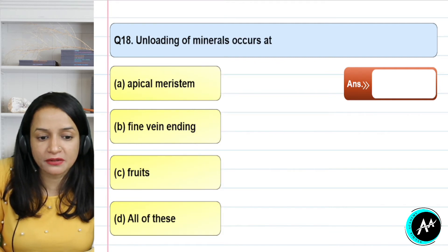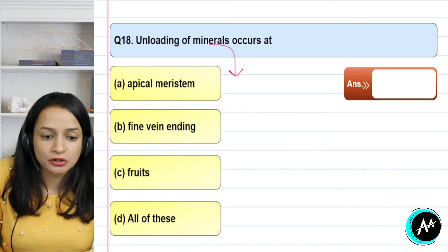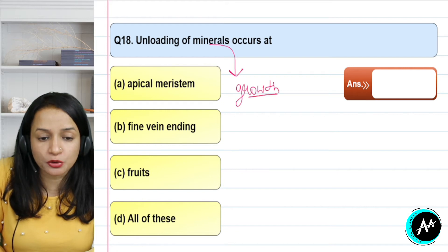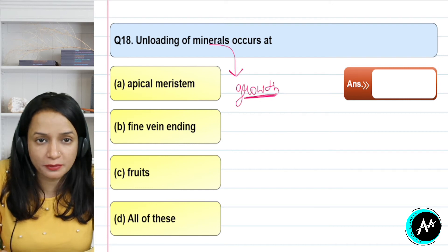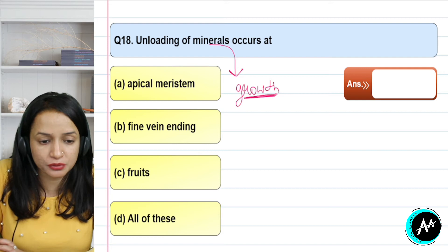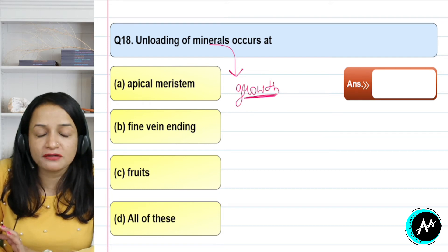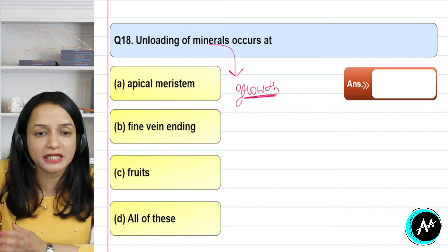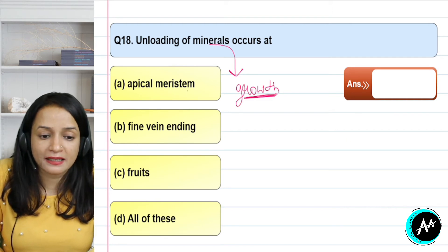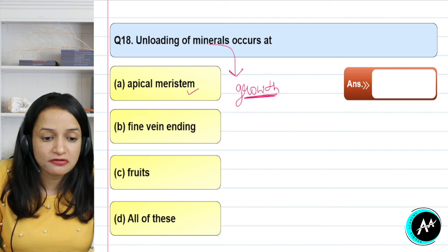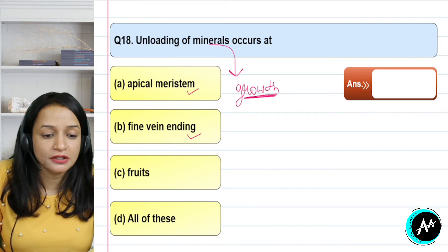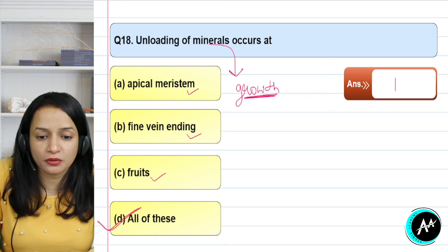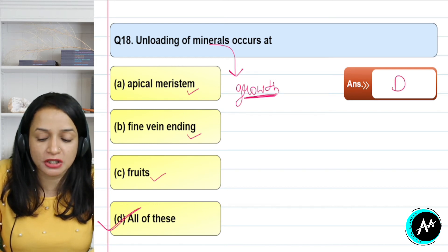Question 18: unloading of minerals — where does mineral unloading happen in the plant? Unloading is needed wherever growth occurs. In plants, growth occurs in new fruits, buds, leaves, and shoots. Every point where growth is occurring requires minerals, and they are released there for the plant to use. So apical meristem needs minerals because cells divide continuously; fine vein endings in the leaf also need them; and fruits also need them. The correct answer for question 18 is option D — which includes all of these.